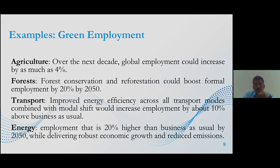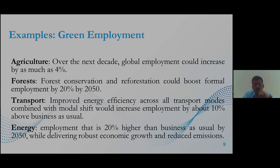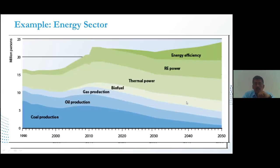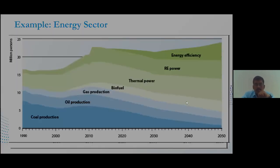Looking at coal production, oil production, gas production, biofuel, and thermal power, along with energy efficiency — all these are being incorporated into the green economy. With the help of the green economy, we can reduce dependability on coal, oil, and gas production.